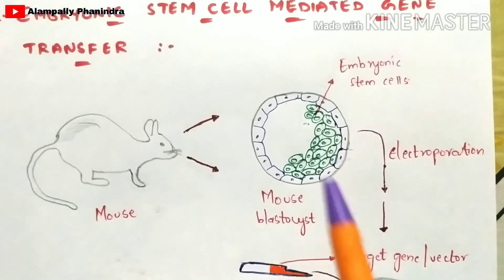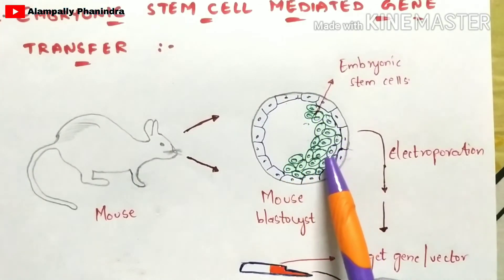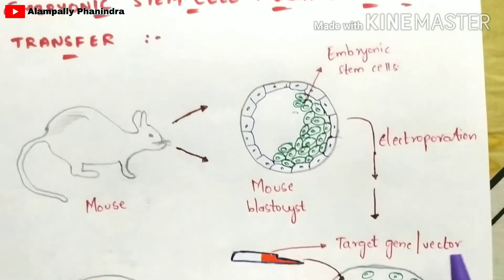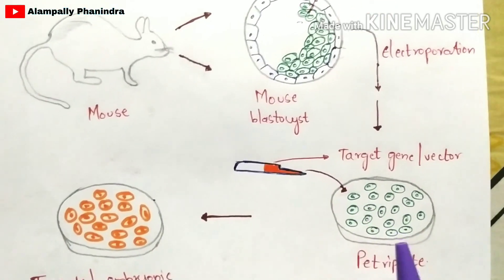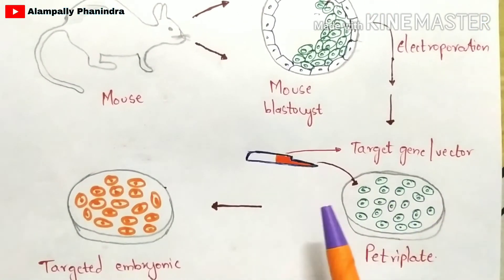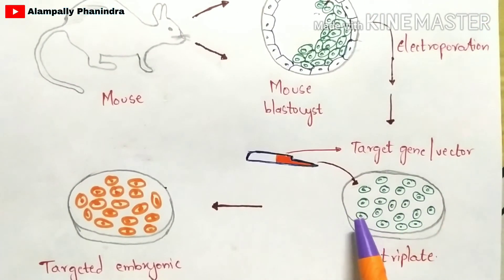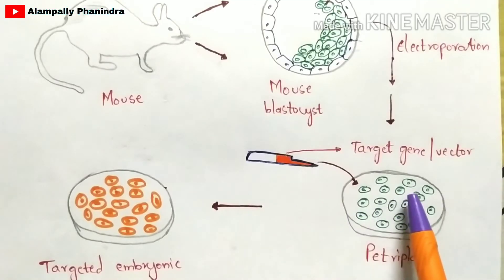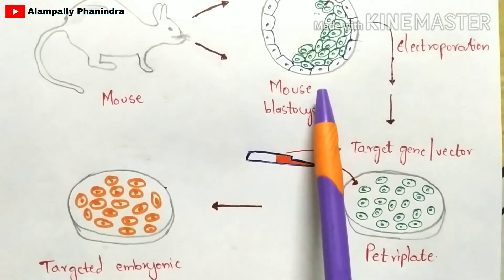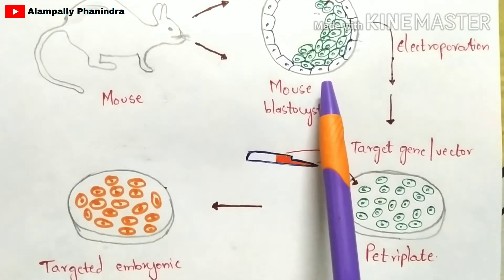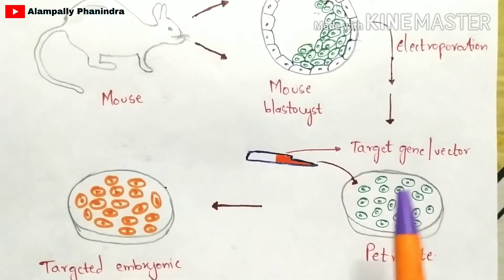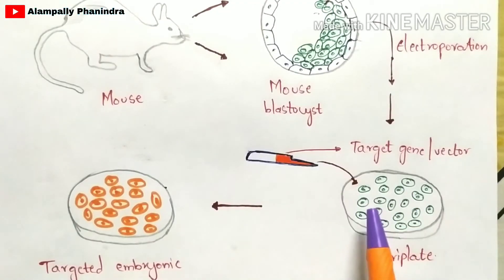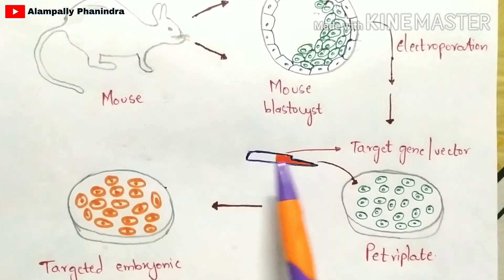Using electroporation technique, you extract the total embryonic stem cells from the blastocyst and place them in a petri plate. All of the embryonic stem cells extracted from the mouse blastocyst are cultured in this petri plate.